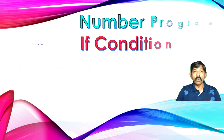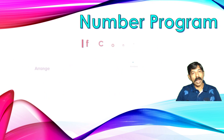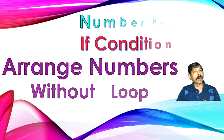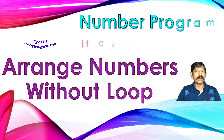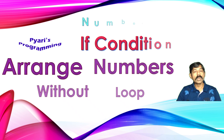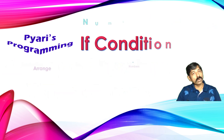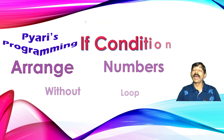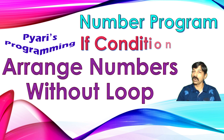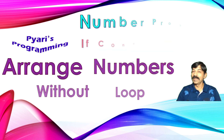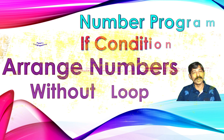We know we can arrange the numbers either using bubble sort or selection sort. For that we need a loop. Is it possible that without using a loop we can arrange the data or sort the data? Let's see how we can do it.